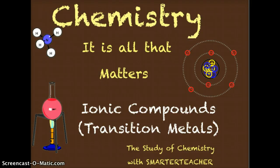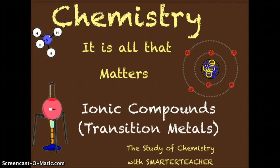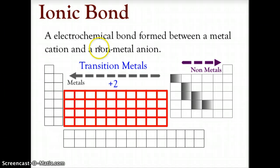Hello and welcome back to our journey of chemistry — it is all that matters. Today we're going to continue with ionic compounds, specifically transition metals. When we talk about ionic bonds, we're talking about electrochemical bonds formed between a metal, which is a cation, and a nonmetal, which is an anion — cations being positive, nonmetals being negative.